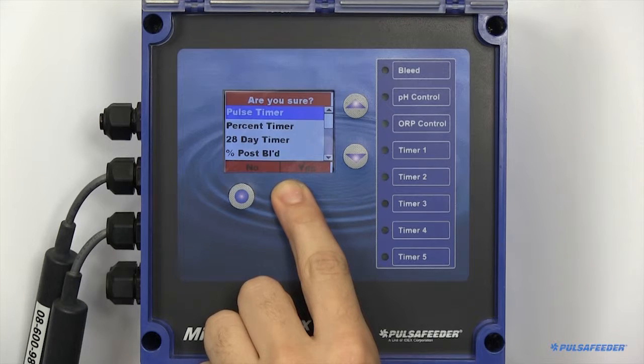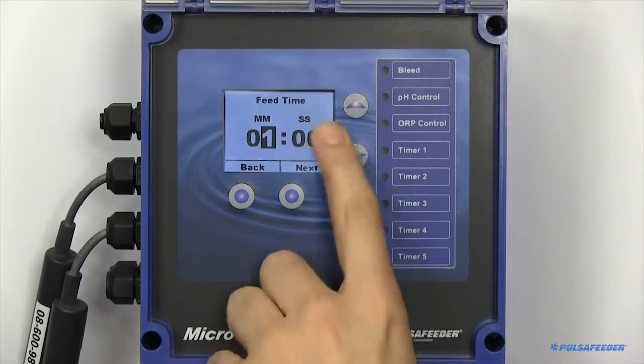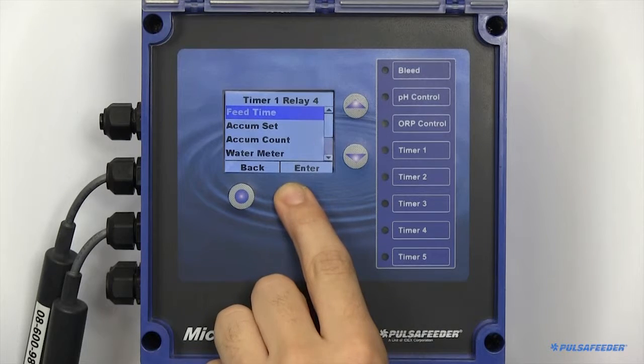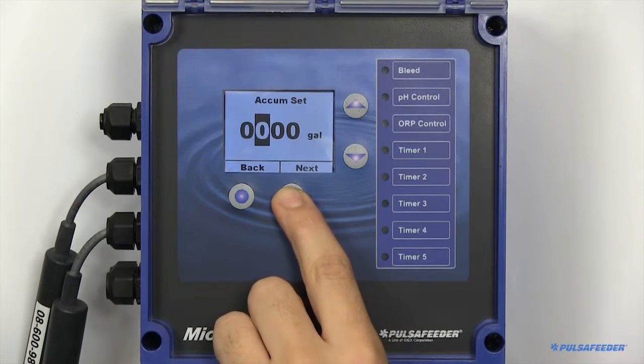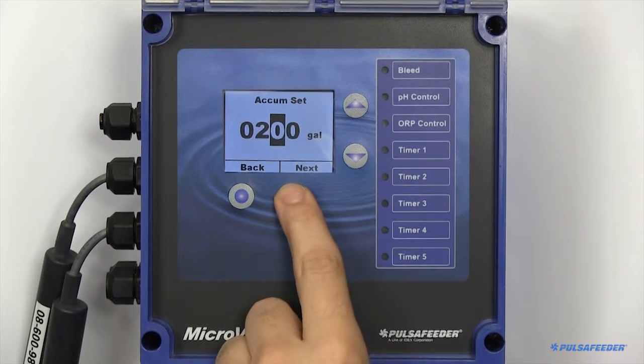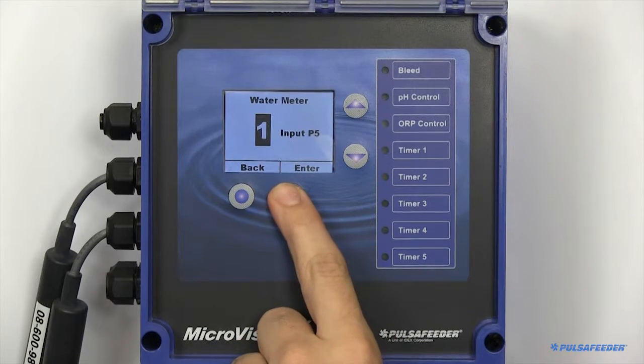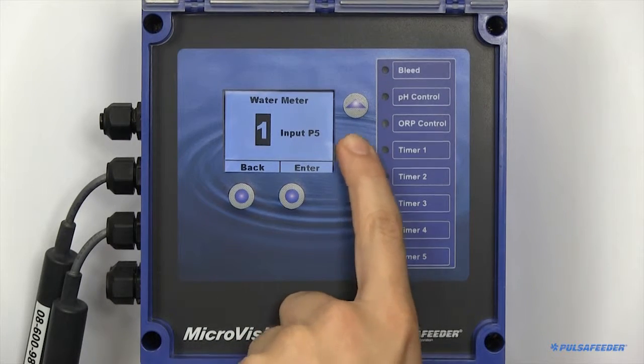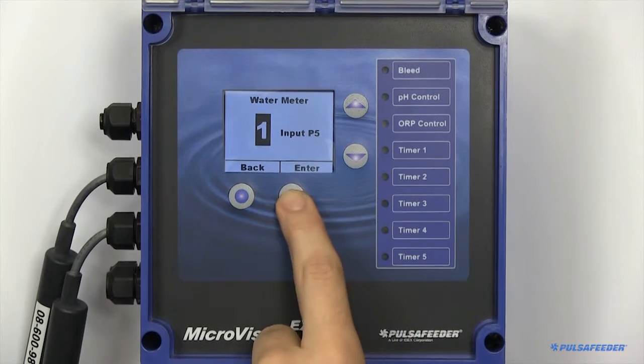To set up a pulse timer, you need to configure the feed time, or the desired amount of time you would like the pump to turn on when your accumulator set point has been reached. Set up your accumulator set point. If you have more than one water meter in your unit, you will need to point this pulse timer to the specific water meter you would like to look at.